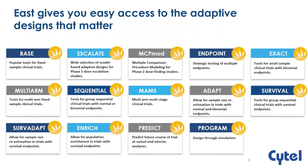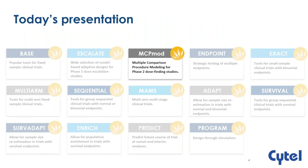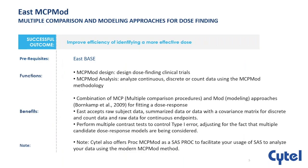Once again, this is the modular structure of the software. We have covered so far the MAMS module, the Escalade module, and the Program module. Today, we're going to be focusing on MCP-MOD — a design which improves the efficiency of identifying a more effective dose to carry into Phase 3. It's based on a combination of multiple comparison procedures as well as modeling approaches for fitting a dose response. We also have a SAS PROC version, which is geared towards the analysis of such studies.